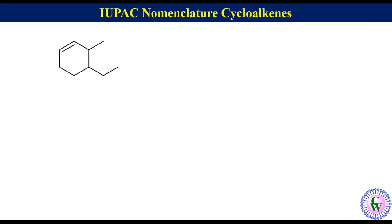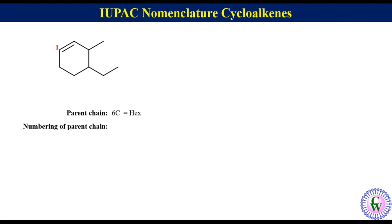Let's take another molecule. In this molecule, the parent chain is a 6-carbon ring, so it will be named as hex. We know that carbons with the double bond get numbers 1 and 2. Clockwise numbering gives 1, 2, 3, 4, 5, and 6, and anti-clockwise also gives 1, 2, 3, 4, 5, and 6. There are 2 substituted carbons. Clockwise numbering gives 3 and 4 to the substituted carbons, while anti-clockwise gives 5 and 6. Since clockwise numbering gives a lower number to the first substituted carbon, clockwise numbering is the correct numbering.